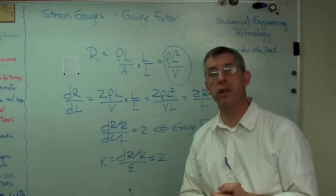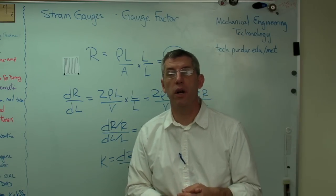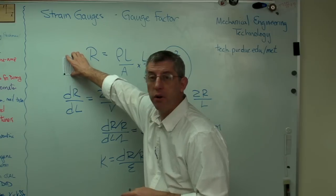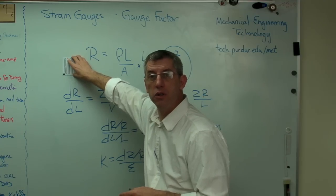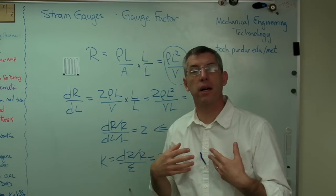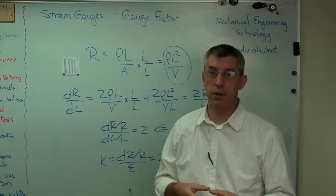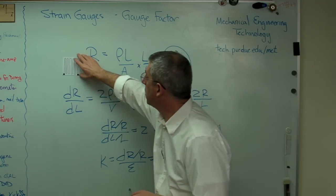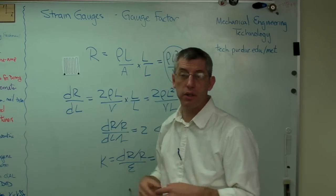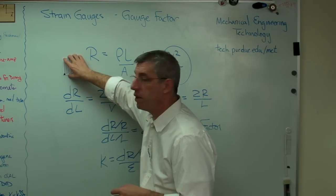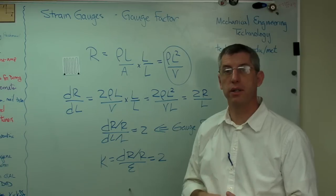The next video in this series is going to be to show you what to do with this thing now that we know how to relate resistance to strain. Data acquisition systems only know how to measure voltages. They don't know how to measure change in resistance. So there's got to be a little bit of circuitry hooked up to this to turn this change in resistance into a change in voltage. That's the next video.